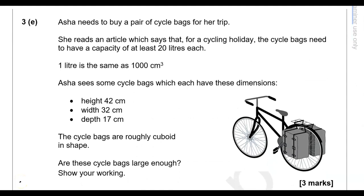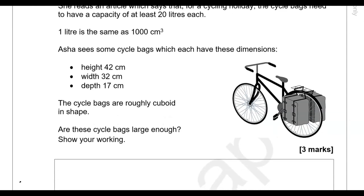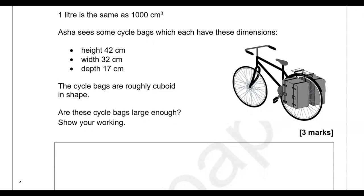Asha needs to buy cycle bags for her trip. The bags need a capacity of at least 20 litres each, and 1 litre equals 1,000 cubic centimetres. The bags have dimensions: height 42 cm, width 32 cm, depth 17 cm, and are roughly cuboid in shape. Are they large enough? Volume = 42 times 32 times 17, which gives 22,848 cubic centimetres.